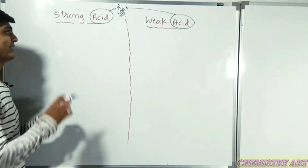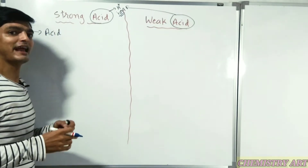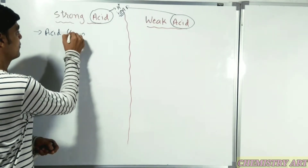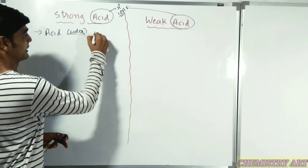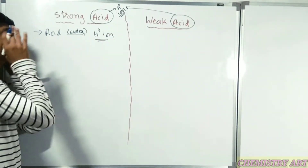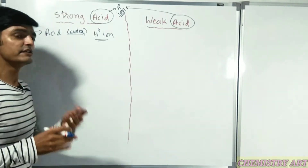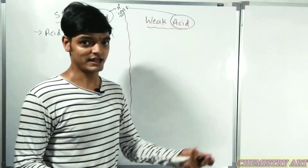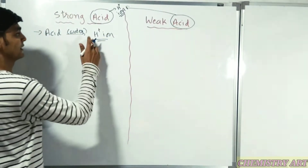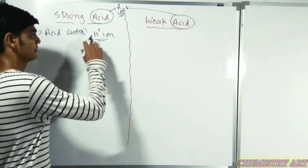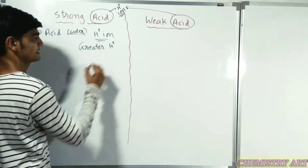So what happens when an acid reacts with water - when acid is dissolved into the water - it releases H+ ions. Whether the acid is strong or weak, it totally depends on the number of H+ ions released. If the greater the H+ ions released, it means it is a stronger acid, and the less number of H+ ions released, it is known as a weak acid.